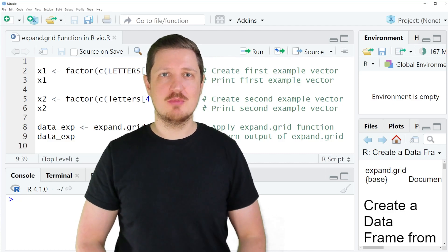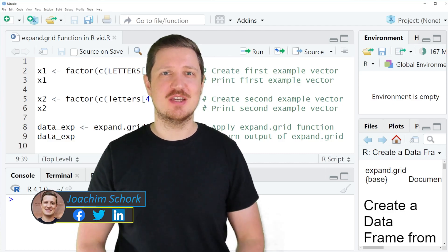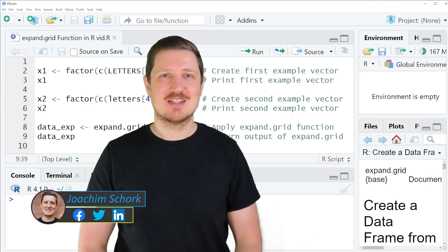This video explains how to return all possible combinations from two data objects using the expand.grid function in R programming language. So without too much talk, let's dive into the code.